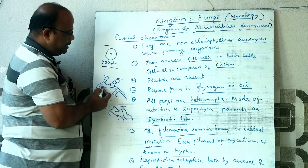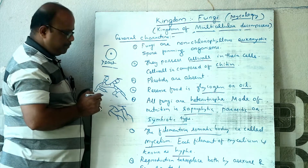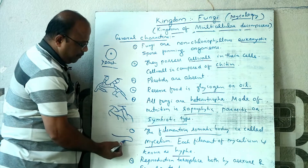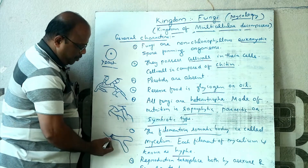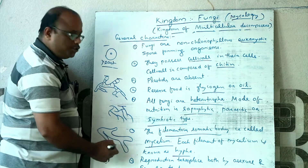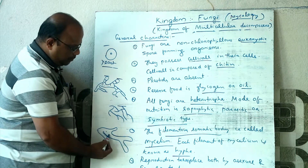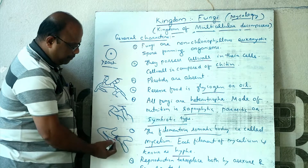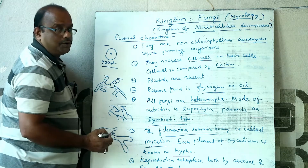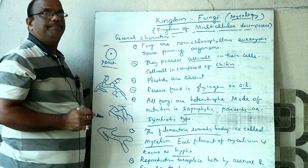The whole filamentous body of fungi is called mycelium. When the mycelium has many cells separated by cross walls, it is called septate mycelium. When the whole body is like a single cell with continuously flowing protoplasm and no septum, it is called unseptate or coenocytic mycelium.